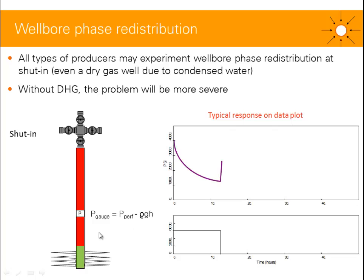So when we perform the shut-in, what might happen is the liquid droplets might fall down the wellbore. They might accumulate at the bottom of the well and in some occasions form a liquid-gas interface. As more and more liquid droplets fall down the well, this gas-liquid interface might move up. If this is the case, then the fluid below the gauge is getting heavier and heavier — the density is getting larger and larger — and what we may tend to see on the pressure gauge is a stabilization or even a decrease in pressure.